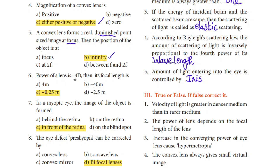Next question: Power of a lens is minus 4D, find its focal length. Power of the lens P equals 1 divided by focal length. So focal length F equals 1 divided by P, which is 1 divided by minus 4, giving us minus 0.25 meters. This is the formula you need to know.